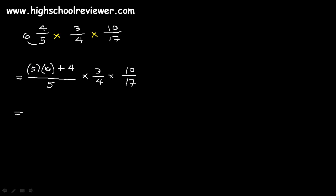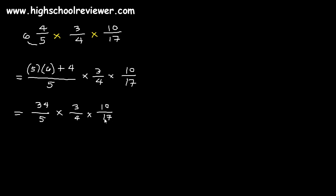5 multiplied by 6 is 30, plus 4 gives us 34 all over 5. And still we have 3 over 4 and 10 over 17. Then cancel out the numerators and denominators. We can see that 34 and 17 have 17 as a common factor. So we divide 34 by 17, which gives 2, and 17 divided by 17 is 1.